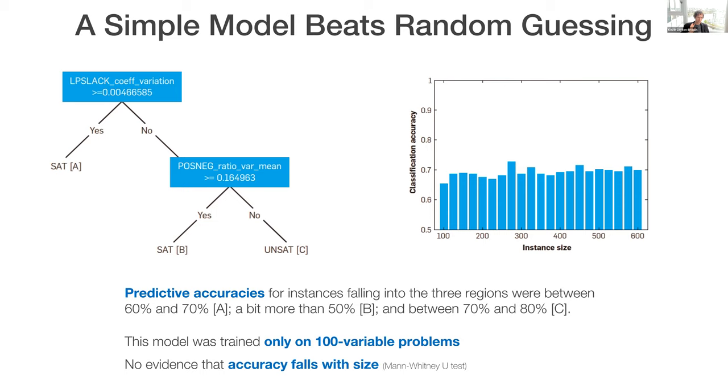So here's what the model did. It said, first of all, let me look at one feature. Let me stress to you, we trained this model only on 100 variable problems. And then we evaluated it on problems going all the way up to 600 variables. And we saw no evidence that accuracy fell with size. In fact, if anything, accuracy seemed to improve very slightly with size. And, let me show you here what the features were.